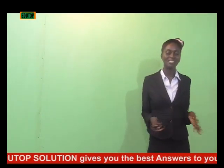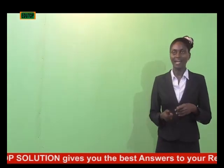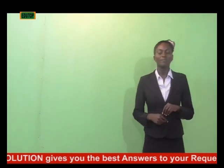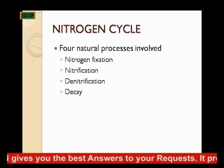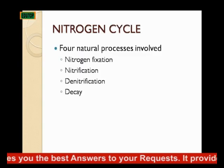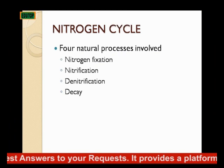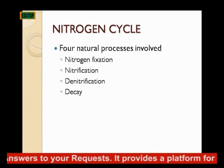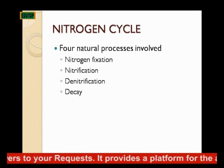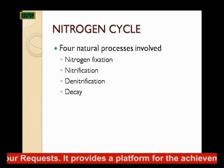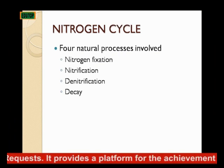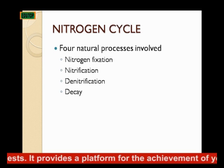The sequence of physical and chemical processes by which atmospheric nitrogen is circulated in the atmosphere. Four natural processes are involved in the nitrogen cycle, which are nitrogen fixation, nitrification, denitrification, and decay. So we have NNDD.